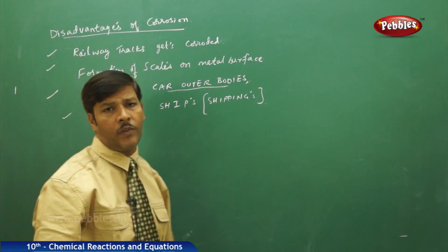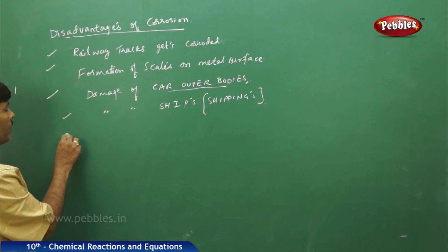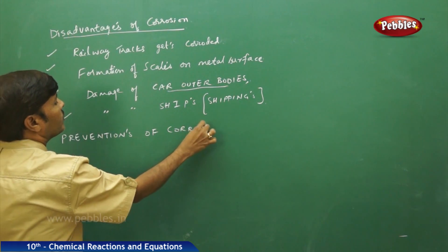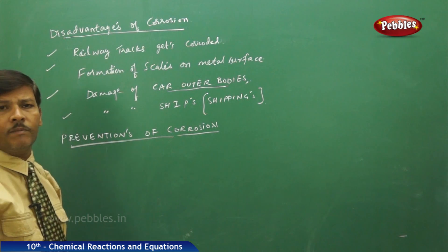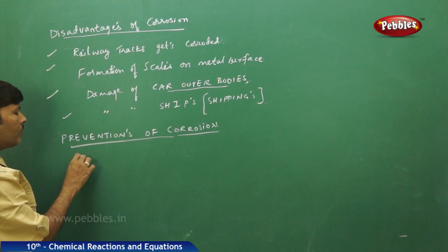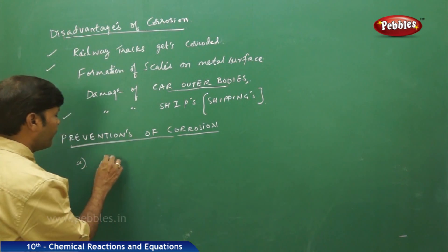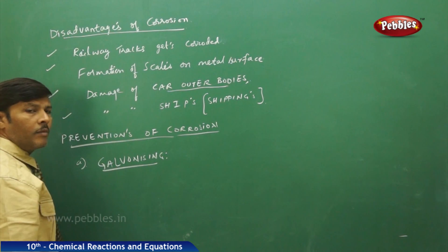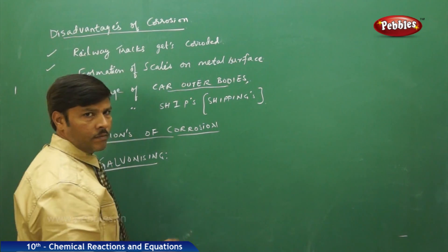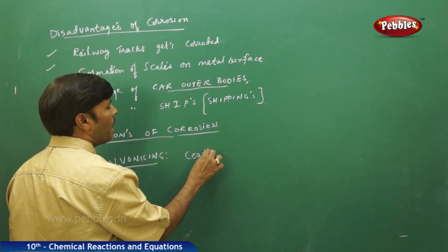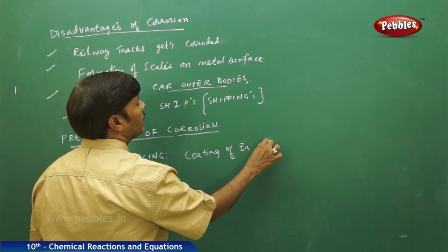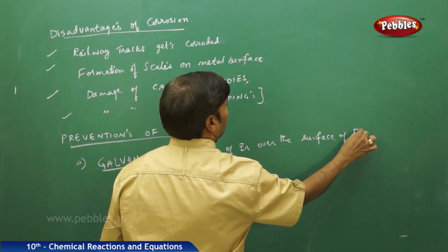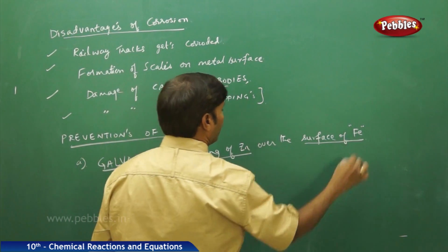So what are the preventive measures of corrosion? One important prevention method is galvanizing. Galvanizing is a method wherein a protective layer is formed on the surface of iron by coating zinc over the surface of the iron metal.